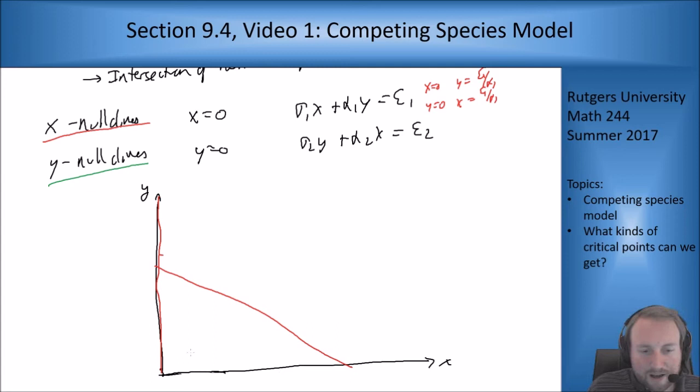In green I get the line y equals zero which is the horizontal line here, and another slanted line based on these parameters again. Now where do I get critical points? I get critical points where a green nullcline intersects a red one. So we get a critical point up here, I get one down here, and I get one here.